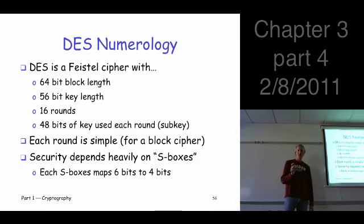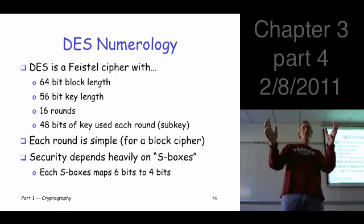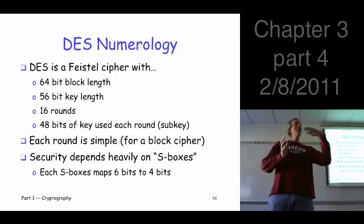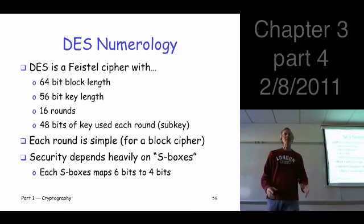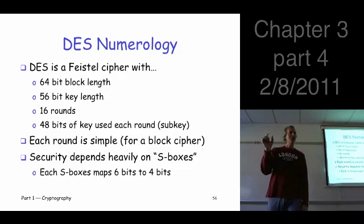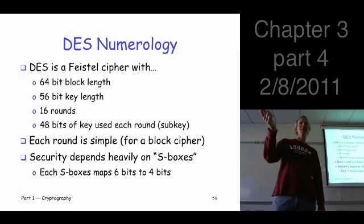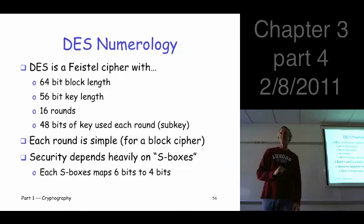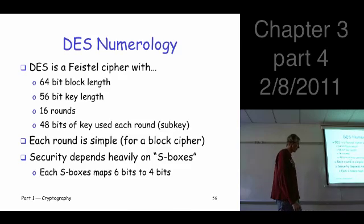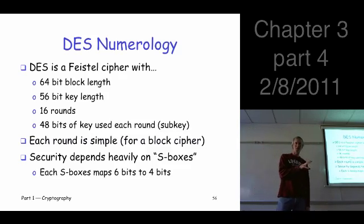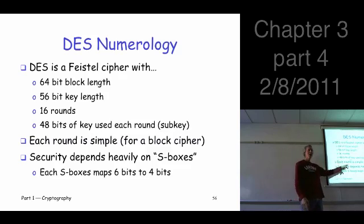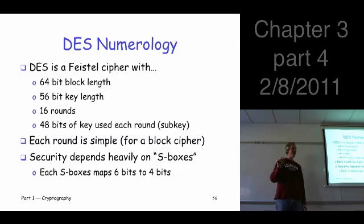So, DES itself. DES is a Feistel cipher. The numbers that go with DES: it's a 64-bit block size — you encrypt a 64-bit chunk of bits and get out a 64-bit chunk of ciphertext. The key is 56 bits, so there are 2^56 possible code books available. There are 16 rounds, and each round uses 48 of the 56 bits of key. Each round of DES is actually pretty simple for a block cipher.